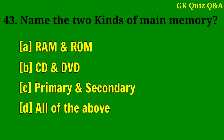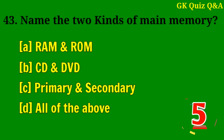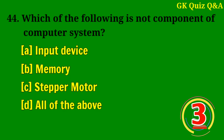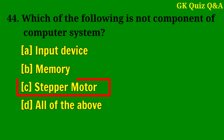Name the two kinds of main memory. Answer A: RAM and ROM. Which of the following is not a component of a computer system? Answer C: Stepper motor.